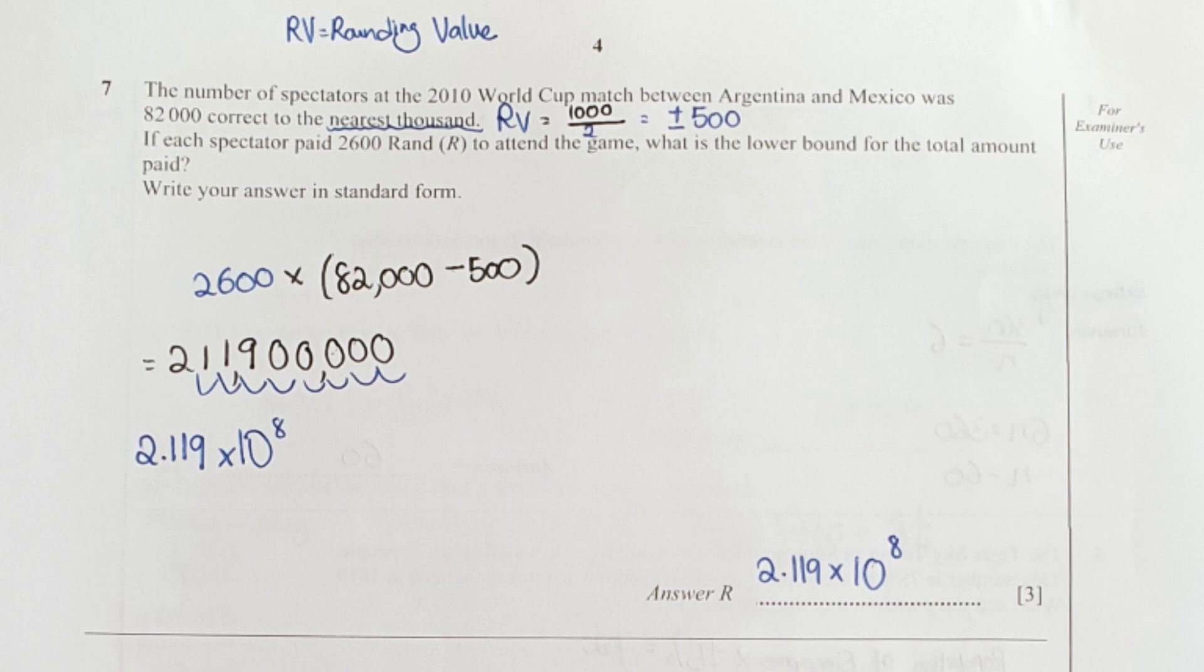You will get 211,900,000. Convert this into standard form. I actually shifted forward by eight steps, so I write it as 2.119 times 10 to the power of 8.